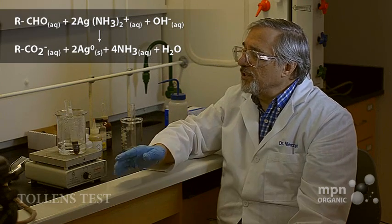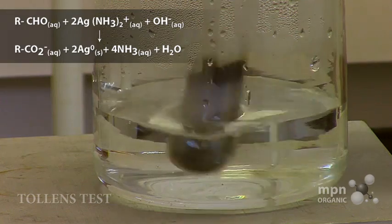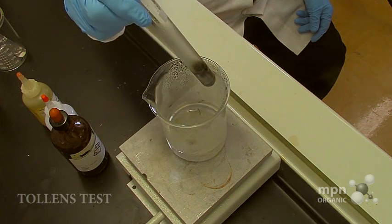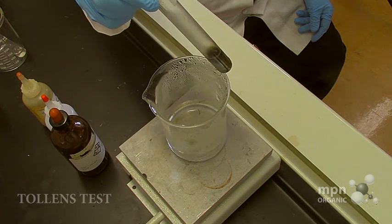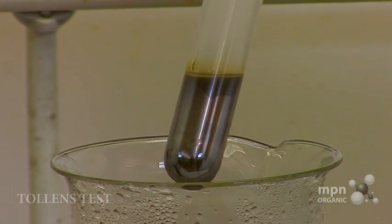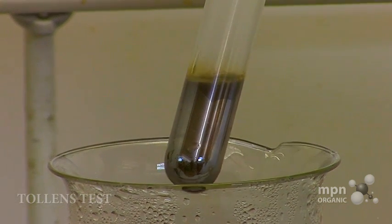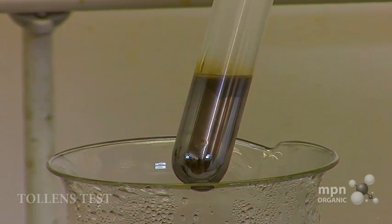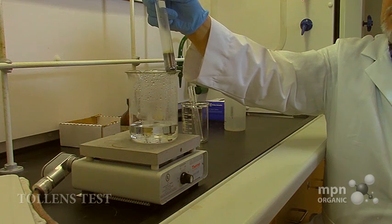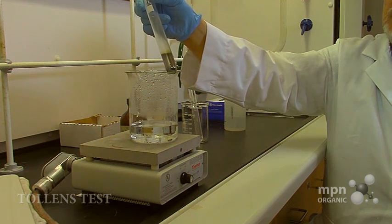What you'll notice is the formation of a very nice silver mirror coating on the inside of that test tube. You see that? This is also called, besides the Tollens test, the silver mirror test. You can see that the silver mirror is forming.